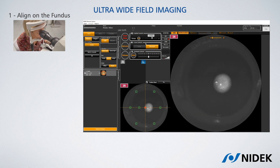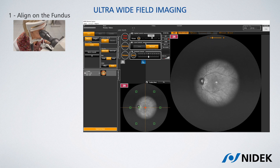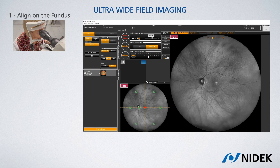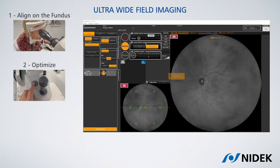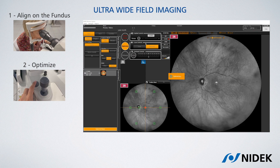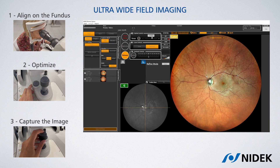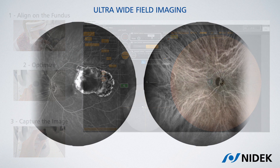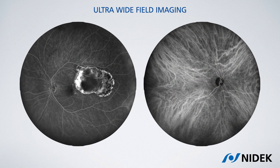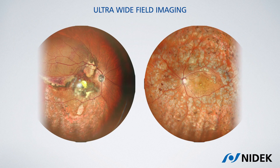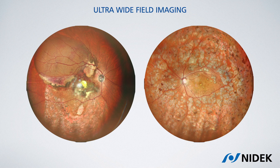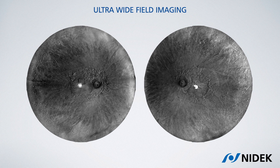As the attachable ultra-wide field lens is more protrudent, one trick to avoid touching the patient is to swing temporarily and tilt inferiorly the optical head. We can then proceed with the optimization of the fundus pictures and capture. In this very same way we can also take ultra-wide field fluorescein and indocyanine angiographies, ultra-wide field color images, and ultra-wide field retro mode images.